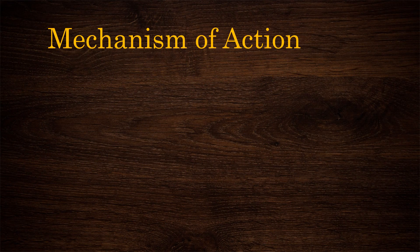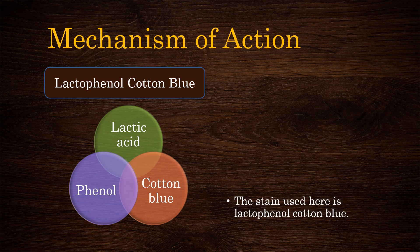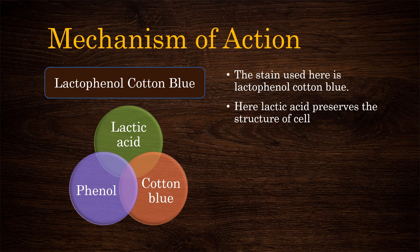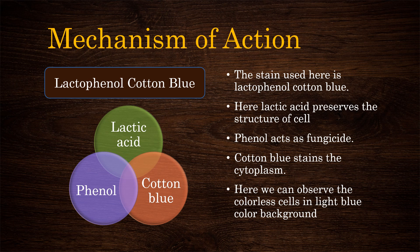Let us study the mechanism of action. We are using lactophenol cotton blue solution, which is made up of three components: lactic acid, phenol, and cotton blue. Lactic acid preserves the structure of the cell. Phenol acts as a fungicide — it kills the fungus cells, so the cell is dead but in a preserved structural form. Cotton blue stains the cytoplasm, and we can observe the colorless cell in a light blue color background.